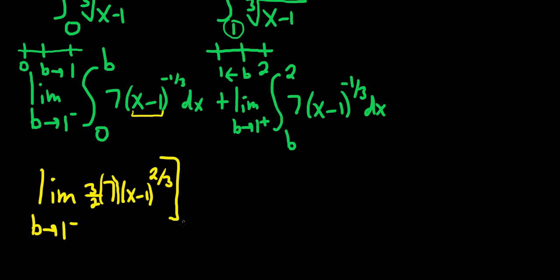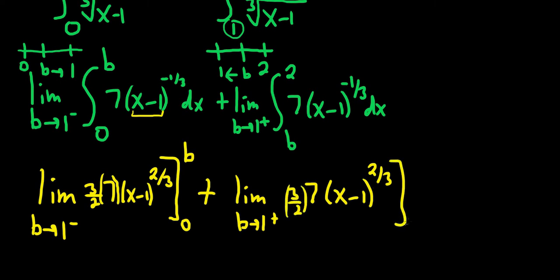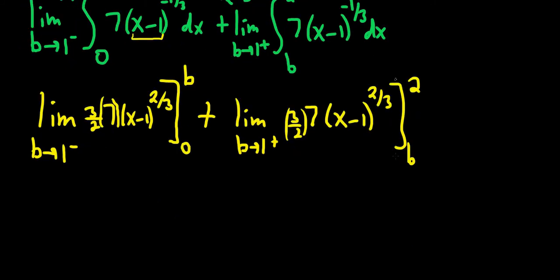And we're going from 0 to b. Plus limit b approaches 1 from the right. Same thing. Let's integrate this. This is 7x minus 1. The integration is exactly the same. So it's negative 1 third plus 3 thirds, which is 2 thirds. We divide by 2 thirds. So we really multiply by 3 halves. Except this time we're going from b to 2. It's a pretty wicked problem.